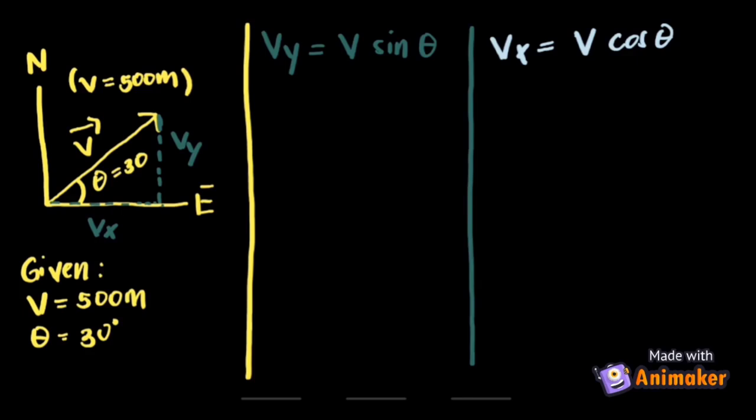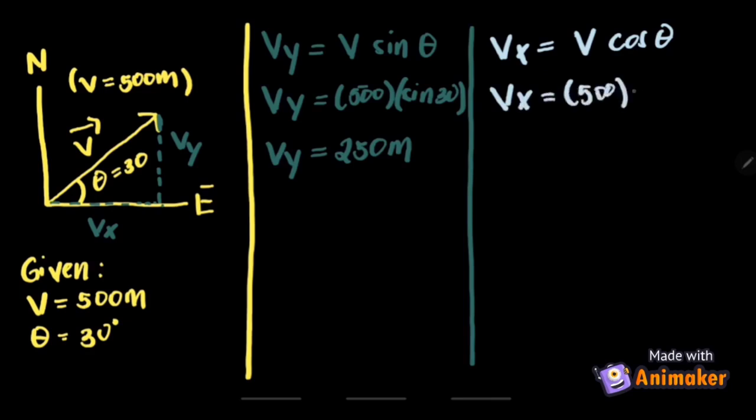To get the Y component, for this specific example, we have V_y equals 500 meters sine 30. We get V_y equals 250 meters. For the X component, we have V_x equals 500 meters cosine 30. And we get V_x equals 433 meters.